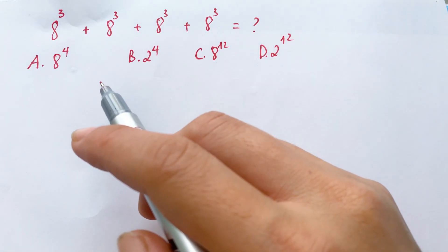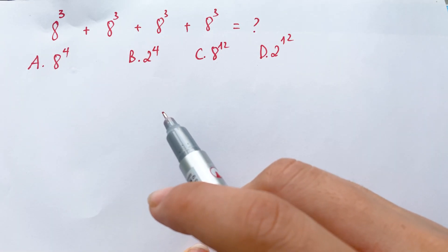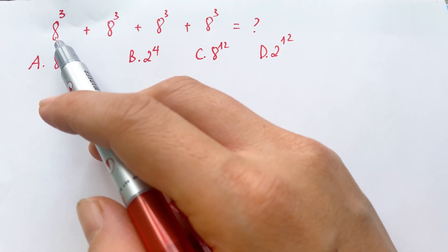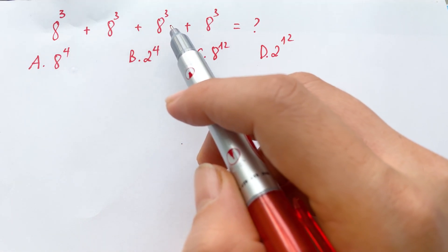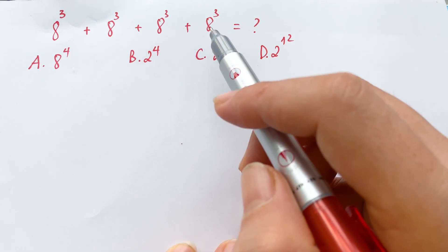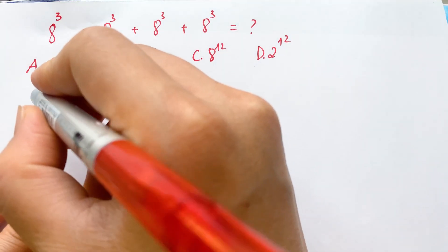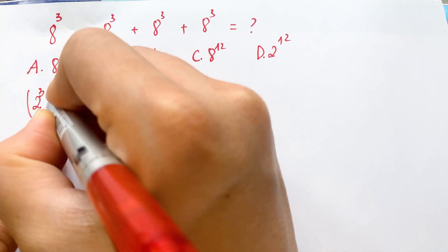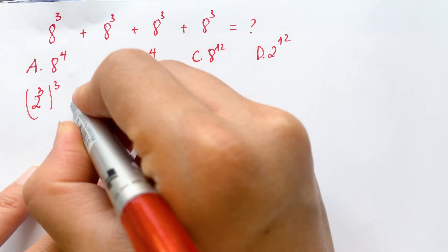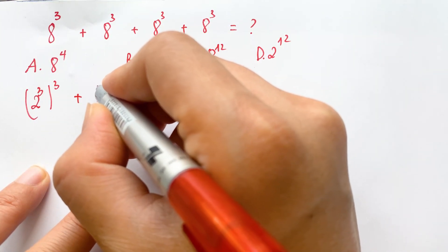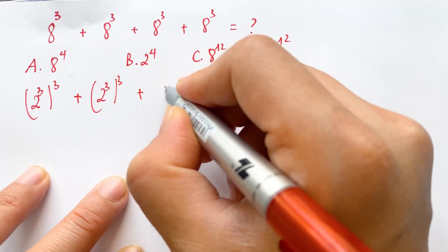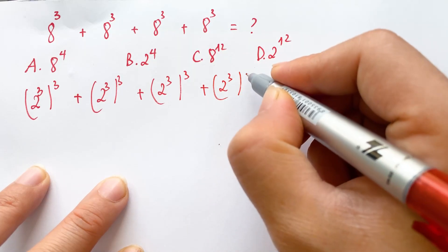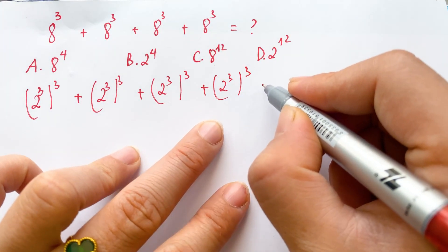Hello, how to simplify the exponential expression. So firstly, everyone can see: 2^q plus 2^q plus 2^q plus 2^q. Firstly, everyone can write 2^q, and then plus 2^q, and next one 2^q plus 2^q.